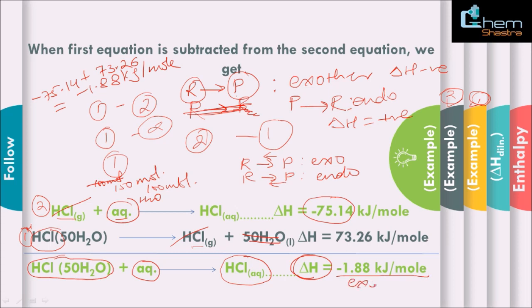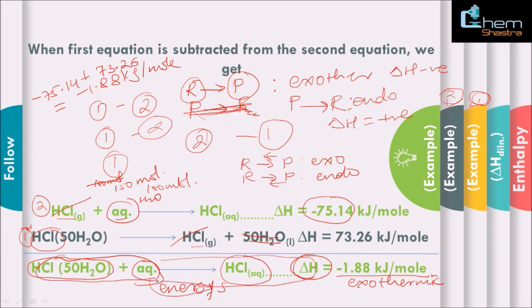You can see that this value is also negative, so this is an exothermic process. That means energy will be released by the system to the surrounding. This is the whole concept of enthalpy of dilution.